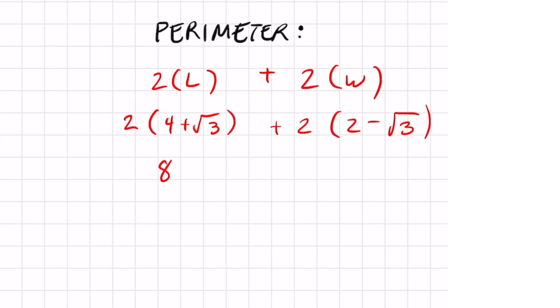2 times 4 is 8 and 2 times square root of 3 right here is just going to be positive 2 root 3. Doing the second part we got 2 times 2 which gets me 4 and 2 times negative square root of 3 is negative 2 root 3.